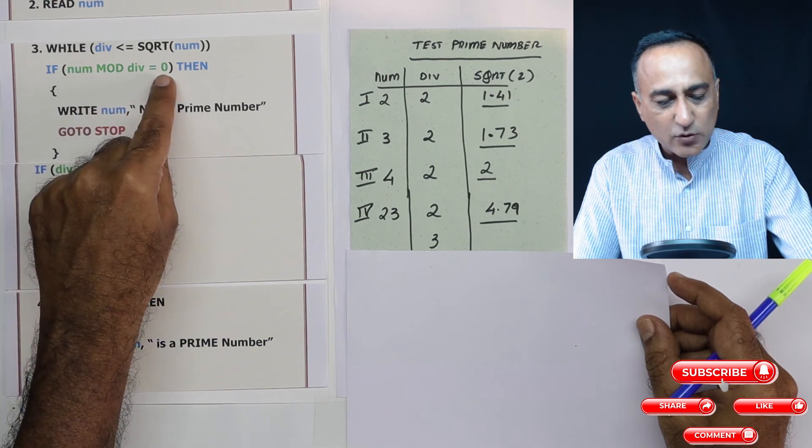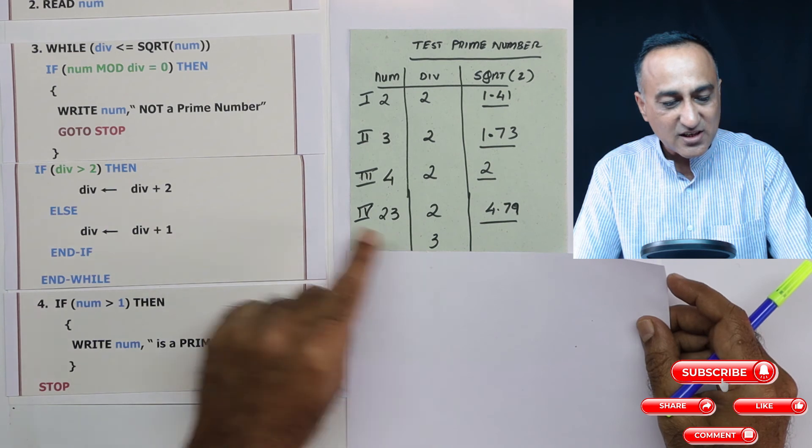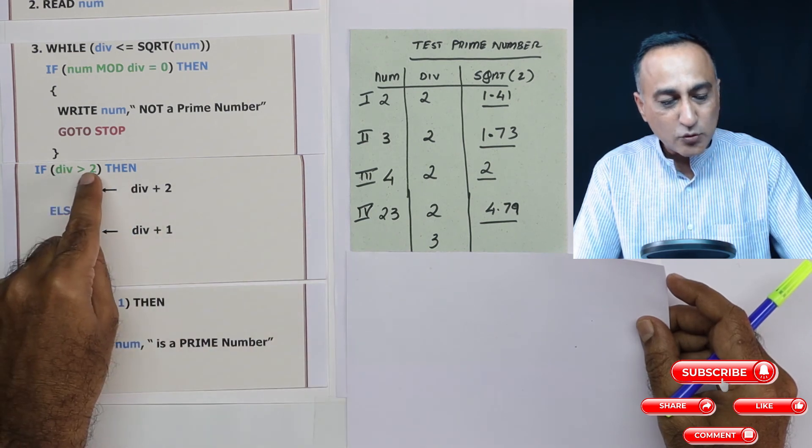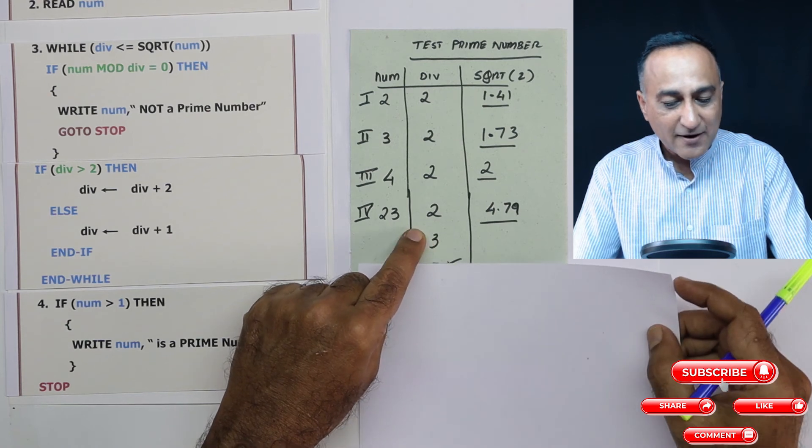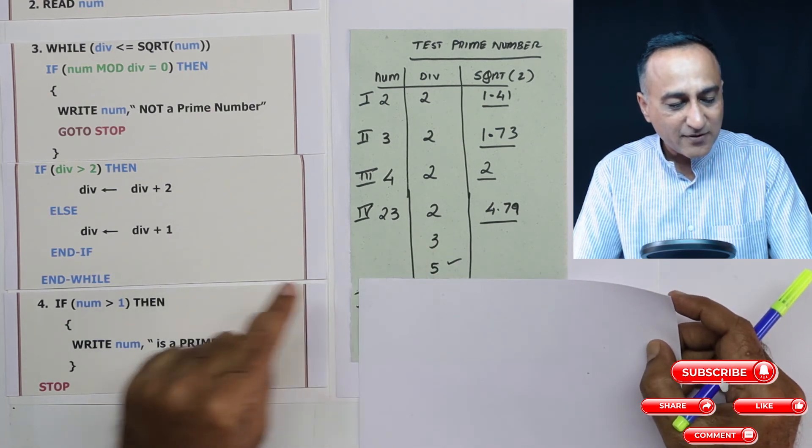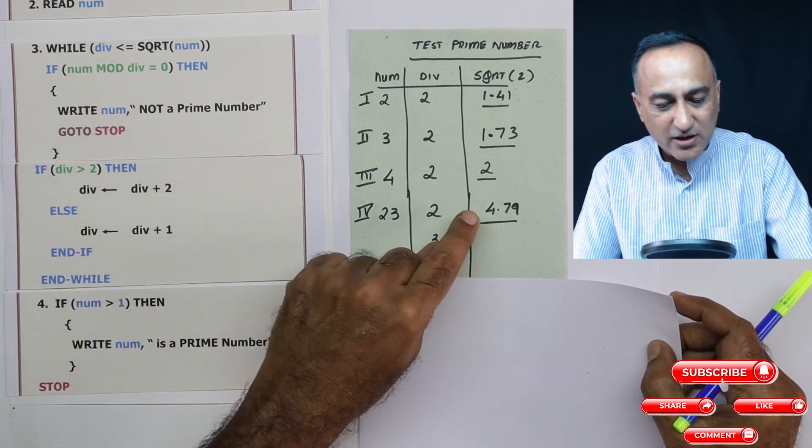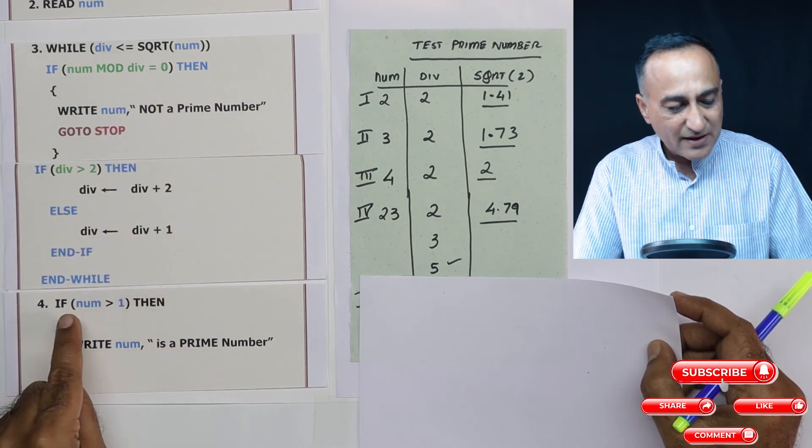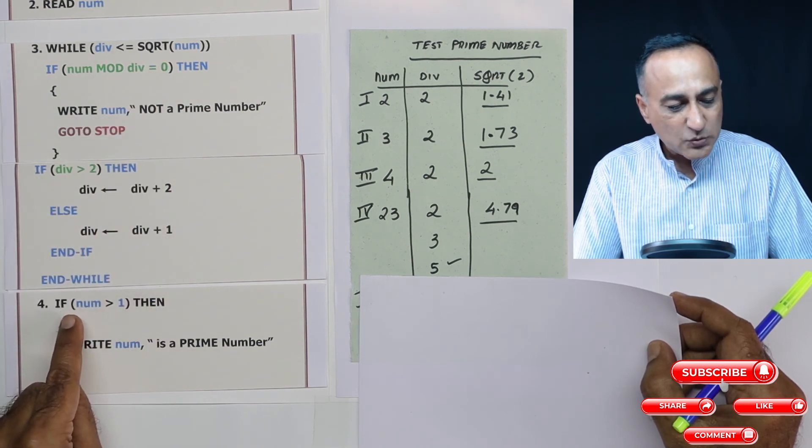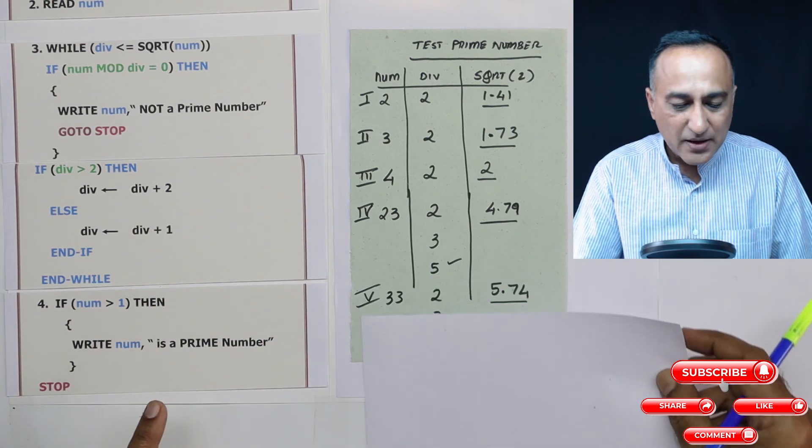This becomes 3. 3 is less than or equal to 4.79. Number is 23. 23 mod 3, is it equal to 0? No. So I will come here. Now what is divisor? Divisor is 3. 3 is greater than 2 is true. So divisor from 3 will end up becoming 5. Once it becomes 5, I go back here, is 5 less than or equal to 4.79? This condition is false. I will come here. Number is 23 greater than 1? Yes. So 23 is a prime number.